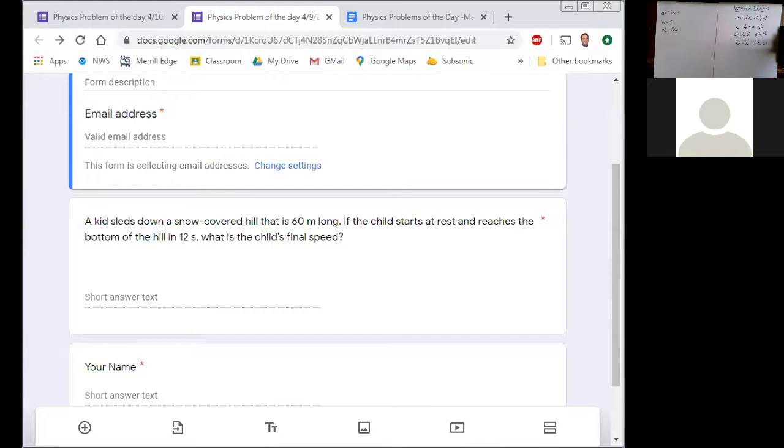Step two would be to figure out the unknown or what question they're asking and which symbol, which quantity are we looking for? The final velocity, right, for the final velocity.